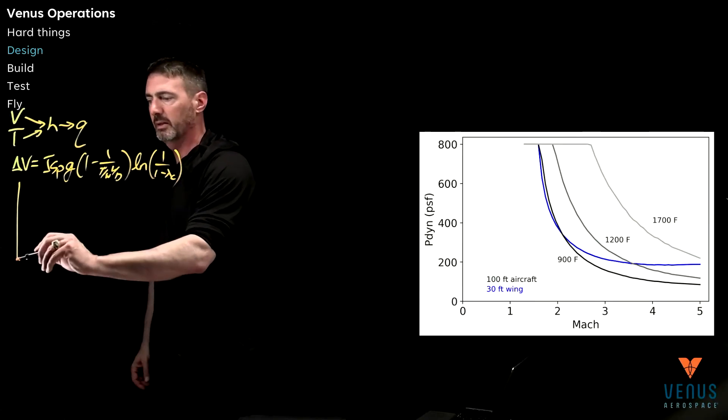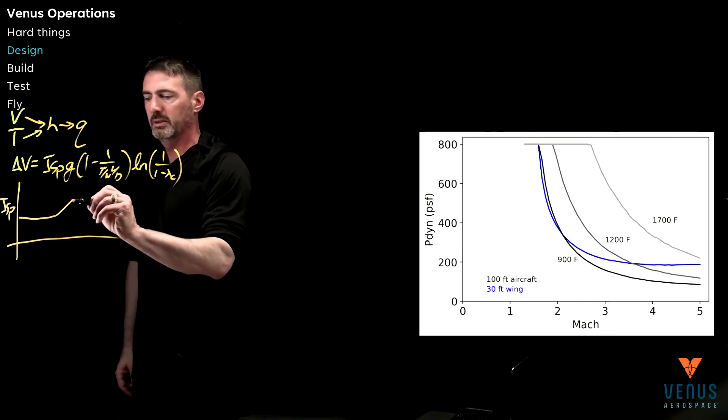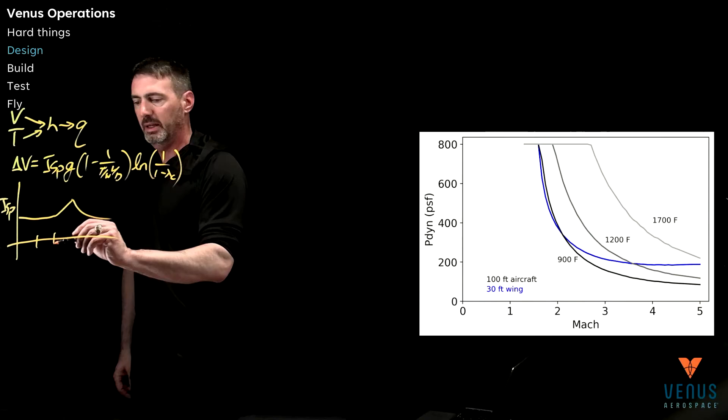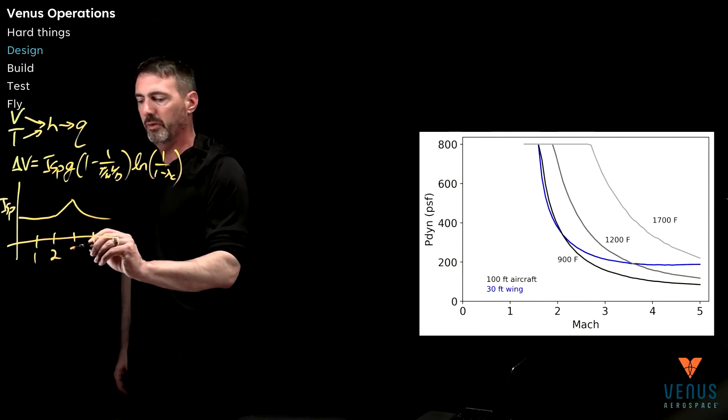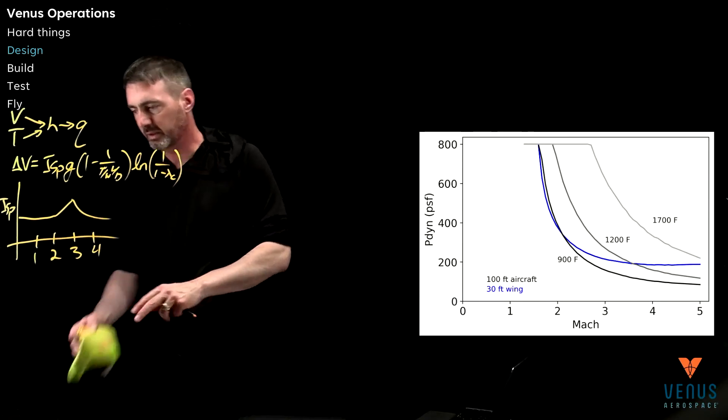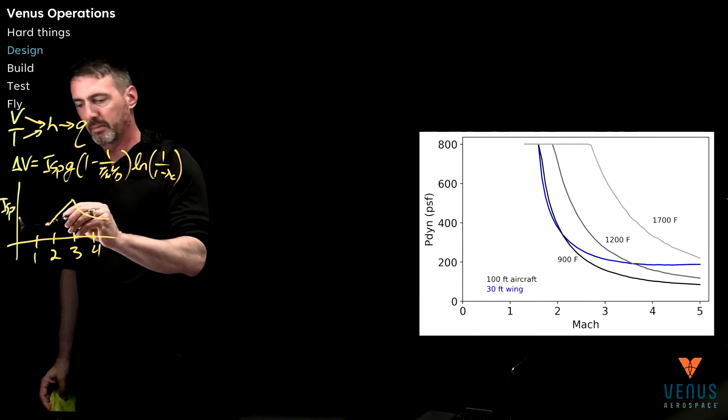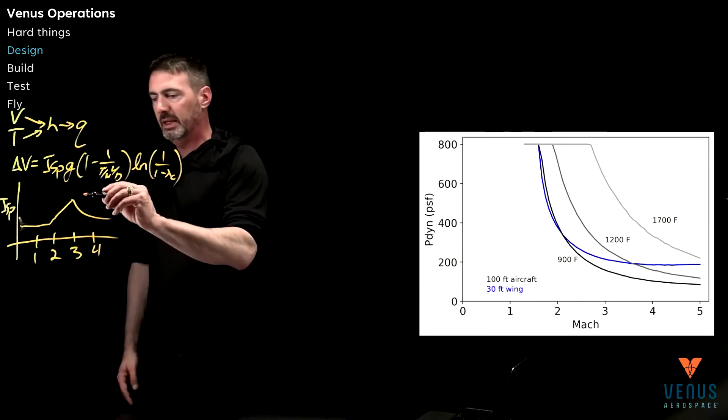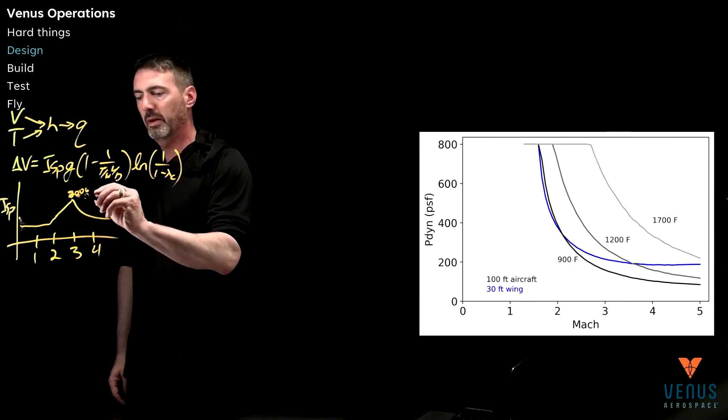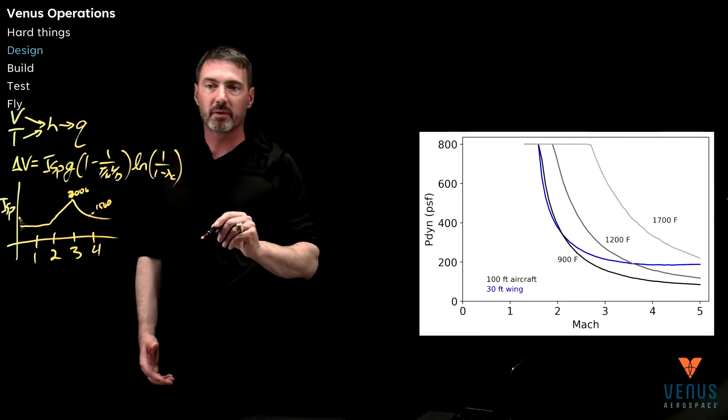And then, just as a reminder that this ISP is not constant. I drew this last time, but for our detonation engine, it's going to look something like that. We'll have an ISP at Mach 1, 2, 3, 4, and this is not quite high enough, so I'm actually going to tweak this a little bit lower. This ISP is roughly 2,000 at Mach 3, and Mach 4 it's 1,500. You get this one over V, that's ramjet.